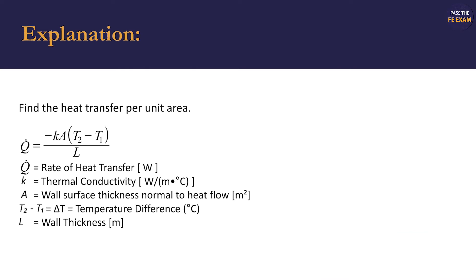Before we use the equation for conduction through a plane wall, we must take note of three things. First, the Celsius and Kelvin scales have a direct linear relationship. The temperature difference between x degrees Celsius and y degrees Celsius is equal to the temperature difference between x units Kelvin and y units Kelvin. Thus, delta T for degrees Celsius is equal to delta T for units Kelvin. So when we see an equation that talks about a temperature difference in Kelvin, we can automatically use the temperature difference in degrees Celsius.